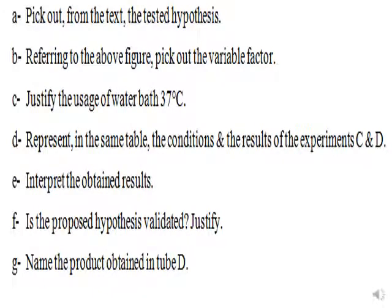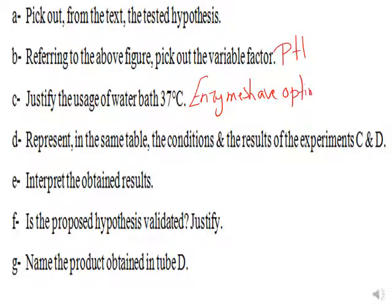First, pick out the tested hypothesis from the text: enzymes are biological catalysts that break down substrates under different pH media. Referring to the figure, pick out the variable factor — it's the pH. Justify the use of water bath at 37°C: because enzymes have optimum function at 37 degrees Celsius, and also it's the body's temperature. Then represent in the same table the conditions and results, interpret the obtained results, state whether the hypothesis is validated, and name the product obtained.